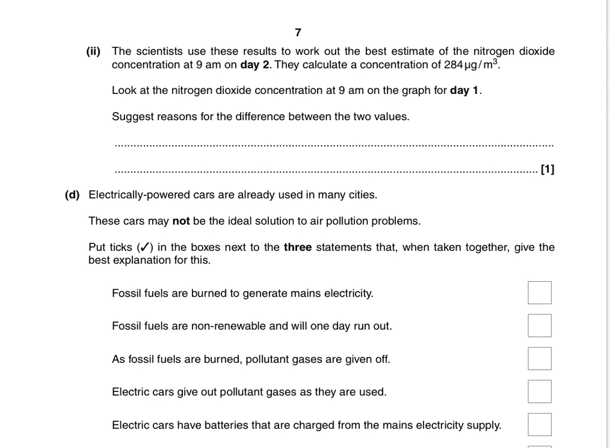Scientists use the results to work out the best estimate — 284 micrograms per metres cubed. Look at the nitrogen dioxide concentration at 9 AM on the graph for day 1 and just suggest the difference between the two values. If you're linking it to the number of cars you need to make clear which is day 1 and which is day 2. Just saying 'there were more cars' would not be enough — you need to be specific, and that's probably why they've highlighted day 1 and day 2 as a clue.